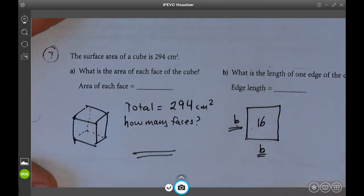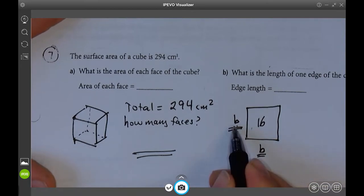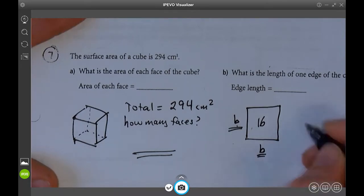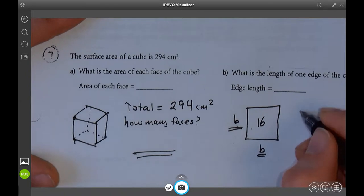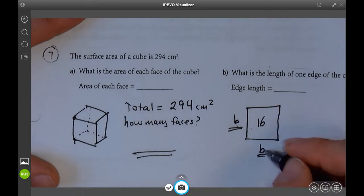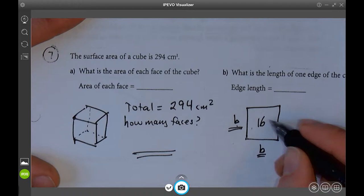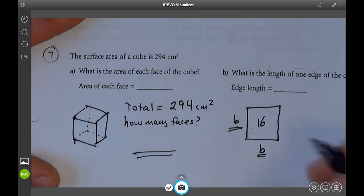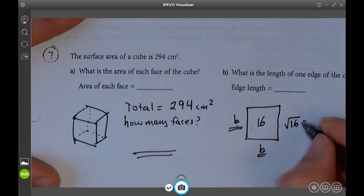So base times base is 16. Some number times some number is 16. We have done this before. How do I find the side length of this? What would it be? Well, you would think it's 4. It's square root of 16, which is 4. 4 times 4 is 16.